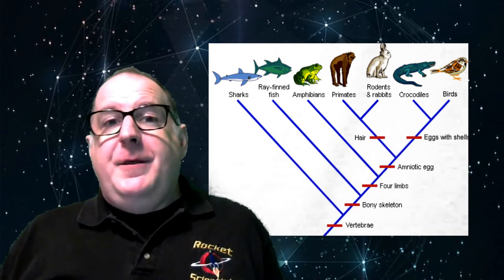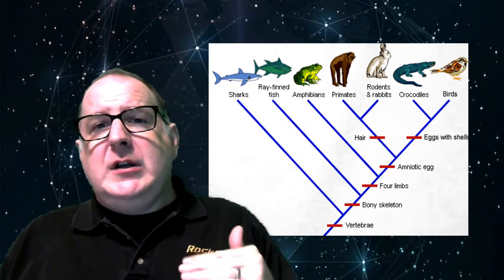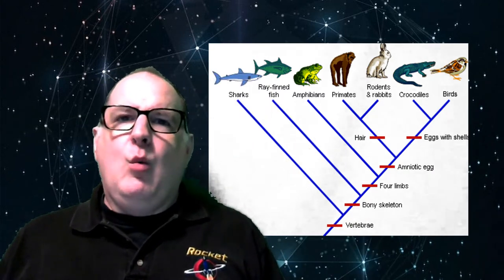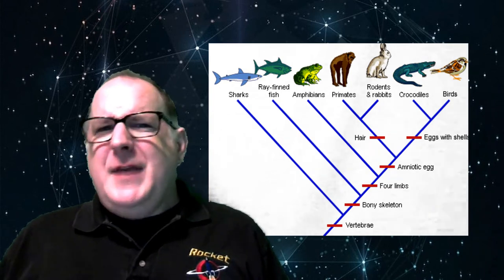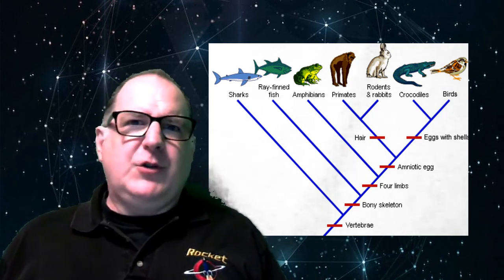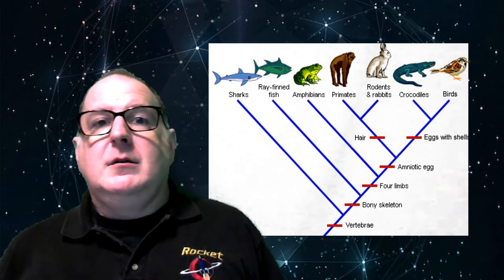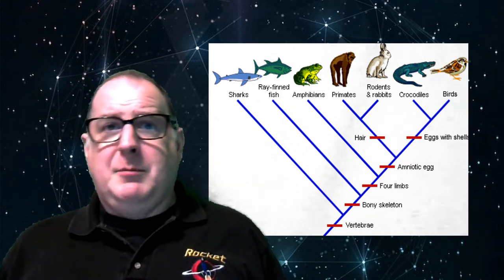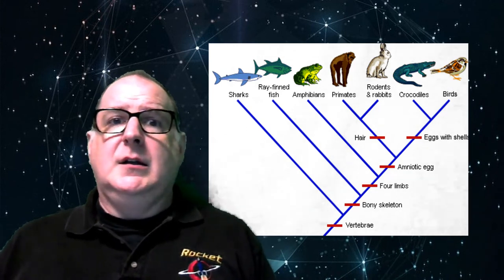With the bottom being ancient and the top being recent, you can see which happened first. The red bars show when these different features or traits showed up. They don't actually show when, as in 35 million years ago - they just show a relative order. We know that the bony skeleton showed up before the amniotic egg. We can see that in the fossil record.